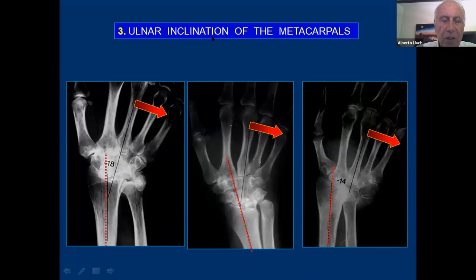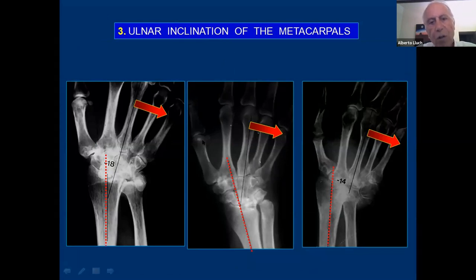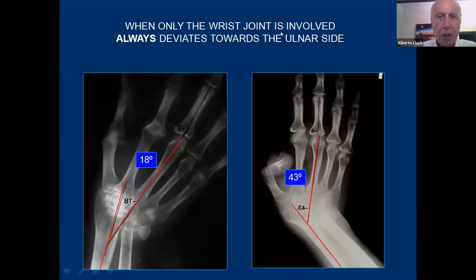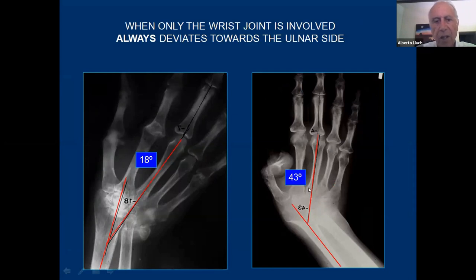The third deformity that we'll see in the wrist is an ulnar inclination of the metacarpals — it's never a radial inclination. If only the wrist is involved in rheumatoid arthritis, the wrist goes towards the ulnar side, same as in any other wrist pathology, whether trauma, infectious arthritis, or any other type. So when only the wrist is involved and the MP joints are relatively normal, it will always be inclined towards the ulnar side, even 43 degrees as in this case.